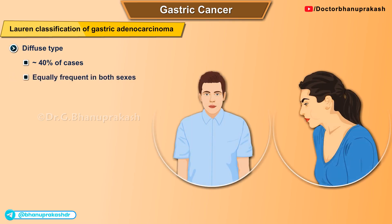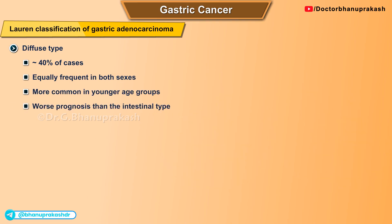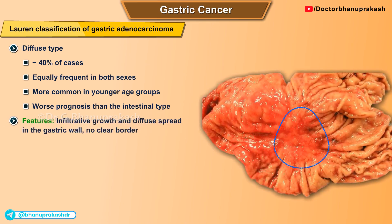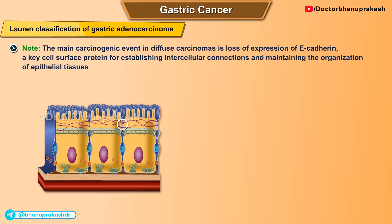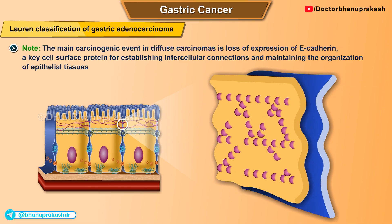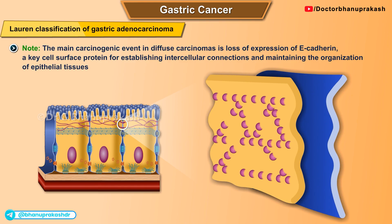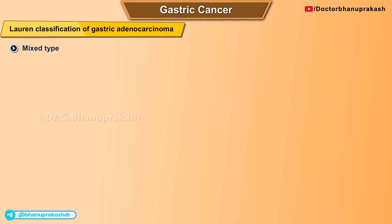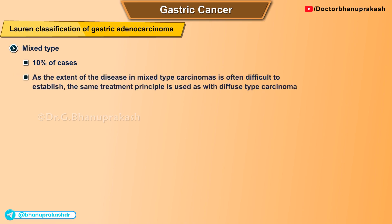The diffuse type accounts for approximately 40 percent of cases. It is equally frequent in both sexes, more common in younger age groups, and has a worse prognosis than the intestinal type. Its features include infiltrative growth and diffuse spread in the gastric wall with no clear border. The main carcinogenic event in diffuse carcinomas is loss of expression of E-cadherin, a key cell surface protein for intercellular connections. The mixed type is seen in approximately 10 percent of cases and is treated using the same principles as the diffuse type.